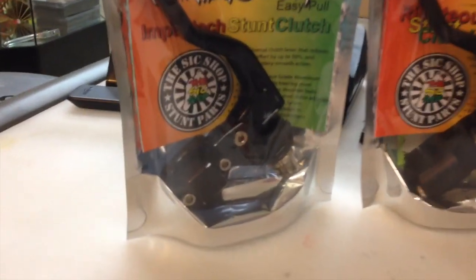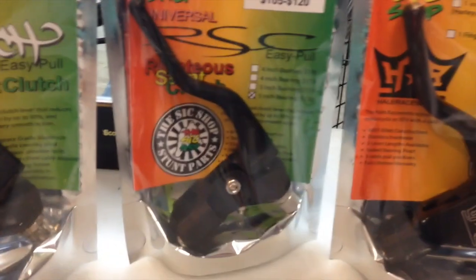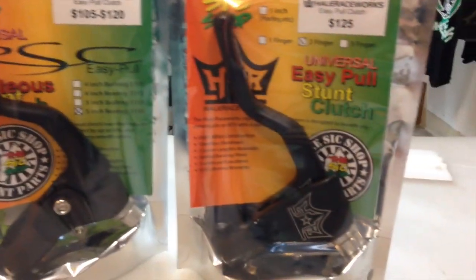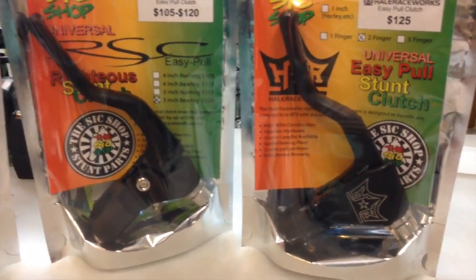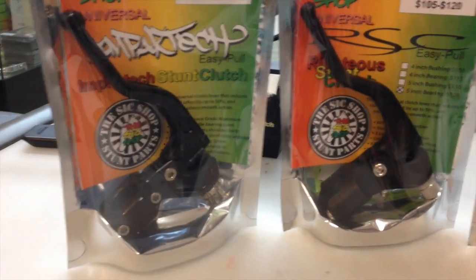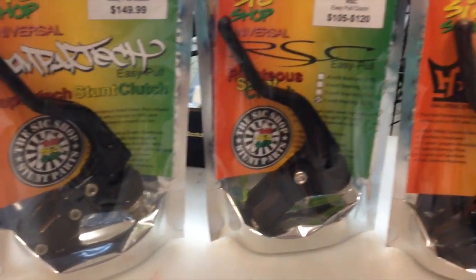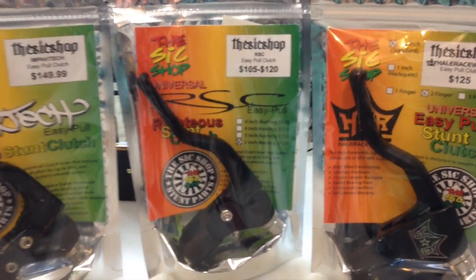So we got the Impact Tech, we got RFC, and Hale Raceworks. All three of these are the bearing pivot type, the models that we're looking at right now today, and I'll get them out of the package here so we can check them out.